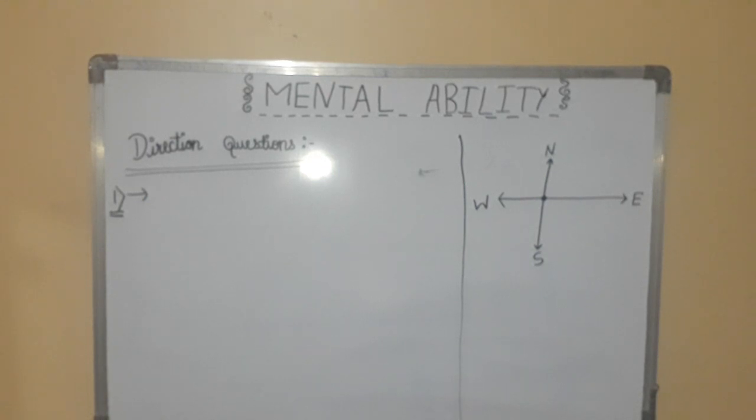So, first the question is Rahim is standing facing North. A boy Rahim is standing facing North. North is at upside so we will start from a point that is North. He is standing facing North, means like this he is standing.